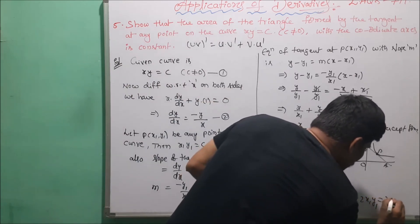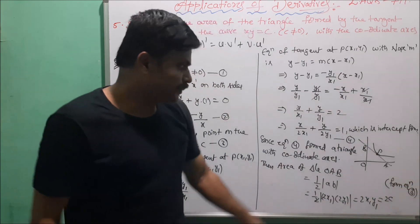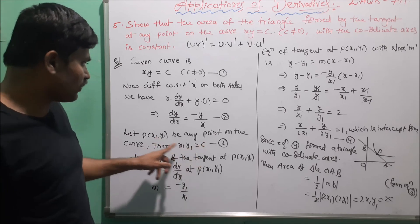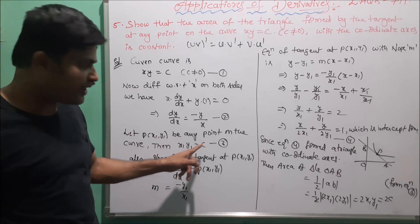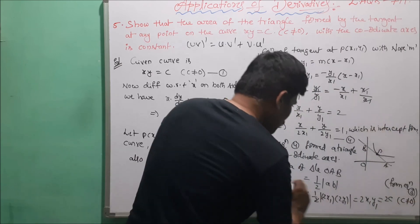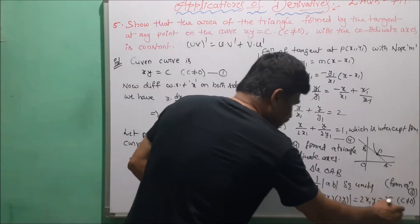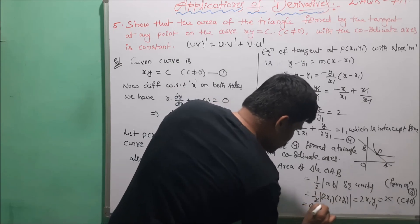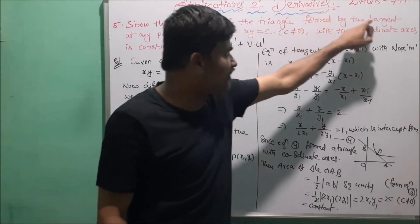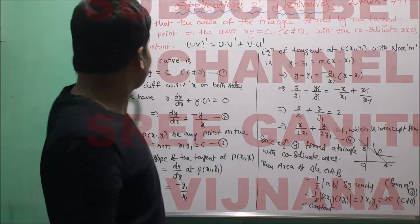From equation 3, the product x1 · y1 = c, because point P(x1, y1) lies on the curve xy = c. Substituting: Area = 2|c|. Since c is a constant and c is not equal to zero, the area equals 2c square units, which is always constant. Therefore, the area of the triangle formed by the tangent at any point on the curve xy = c with the coordinate axes is constant.